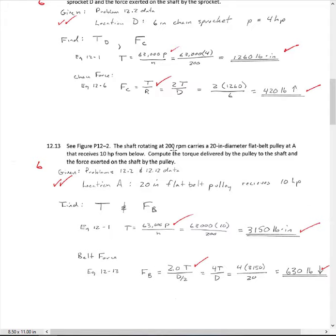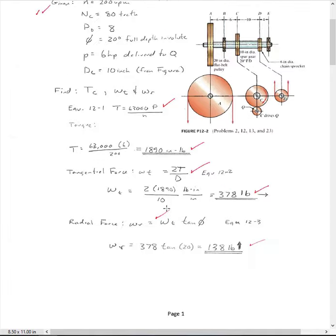There's a third power transmission element connected to the shaft. And this is actually where the belt is getting its power from. So the shaft is rotating again at 200 RPMs. It carries this 20-inch diameter flat belt pulley at point A that receives 10 horsepower from below. Compute the torque delivered by the pulley to the shaft and the force exerted on the shaft by the pulley. Okay, so when we look at the sketch here, this force is going to be actually reacting shaft. It's going to be downward.